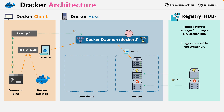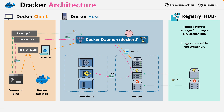Once you have one or more images on the Docker host, you can use the Docker run command. The Docker daemon will use this command and run containers using Docker images. A container is just like a Docker image, only instead of being read-only, we add a read-write component, and this becomes a container. This allows data to be stored within that container and allows the container to be run on a Docker host.